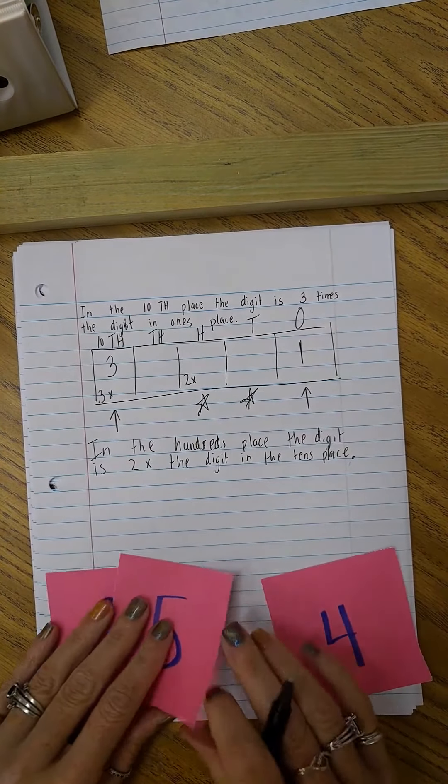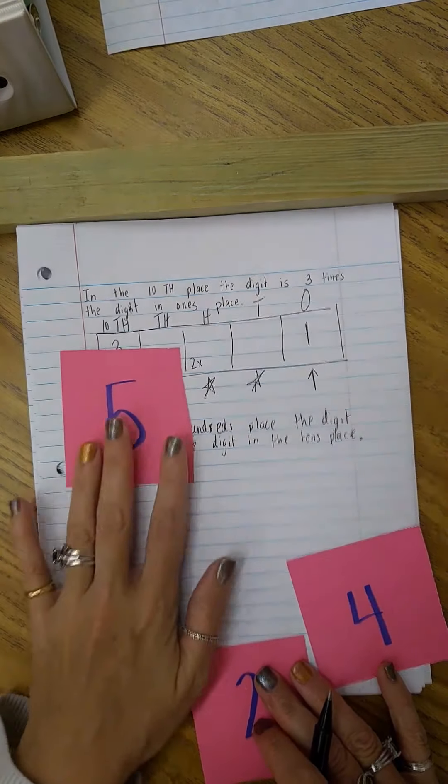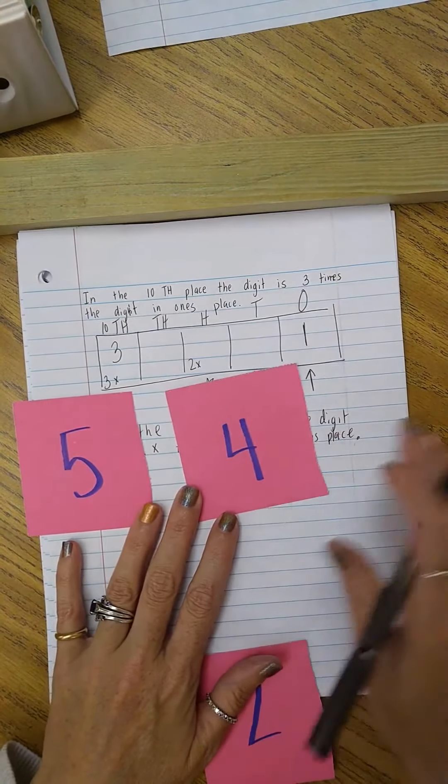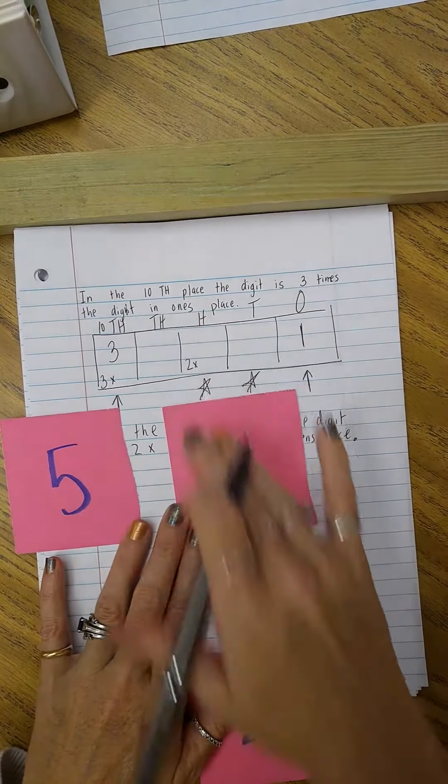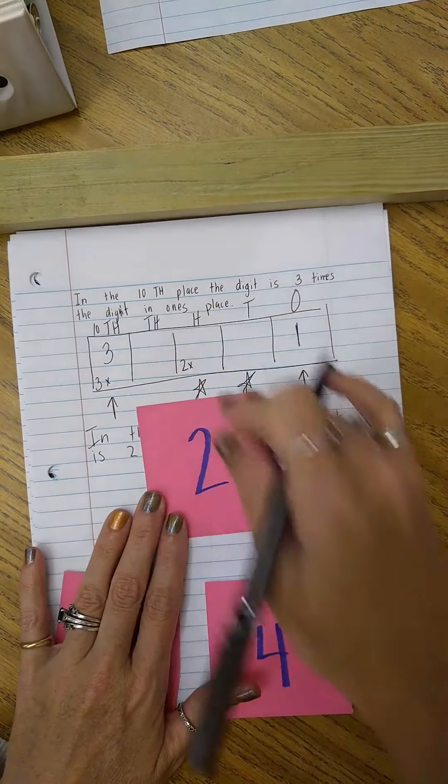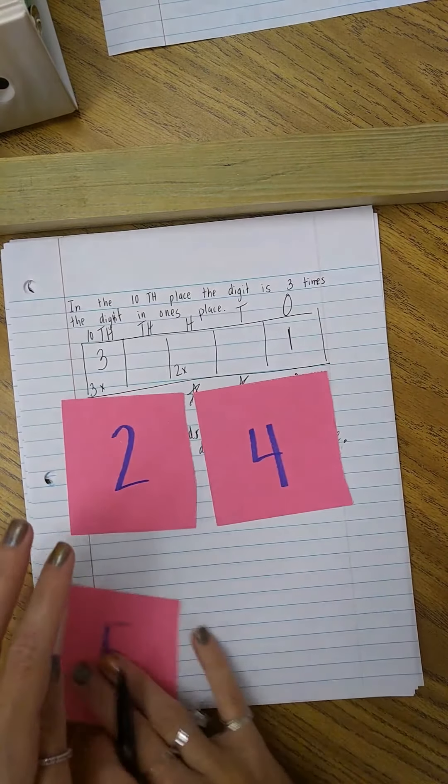So I'm gonna look at my numbers. I have five. Well two times five is ten. I don't have ten because that's not one of my digits. So then I'm gonna go to four. Two times four is eight. So that can't be in the hundreds place. Two times two is four. So I do have a two and a four.